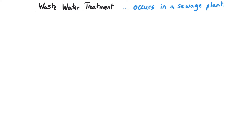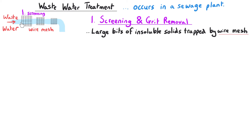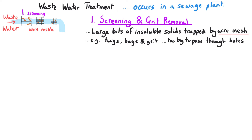Wastewater treatment occurs in a sewage plant, and there are four main stages. The first stages are to remove the insoluble solids. The first of these is called screening and grit removal, which involves passing the wastewater through a series of metal grids or grills. This removes large pieces of insoluble solids such as twigs, grit, or plastic bags. The grills have a decreasing hole size, which allows progressively smaller pieces of insoluble solid to be removed.